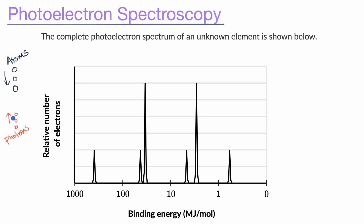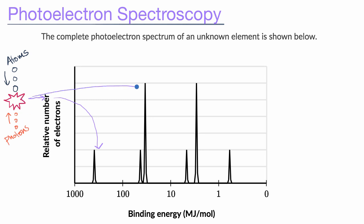These photons are high enough energy — in fact, they're typically X-ray photons — so that when they collide, the photons are high enough energy to overcome the binding energy of even the core electrons. As those electrons get knocked out, they move away and enter into a magnetic field that will deflect them and make them hit a detector. The electrons closer to the nucleus have the highest binding energy, so more of the photon's energy is used to knock them off, leaving less for kinetic energy. So those closer electrons won't get as far, while the outer electrons, which have the lowest binding energy and are easiest to knock off, get more kinetic energy and hit the detector at a further point.